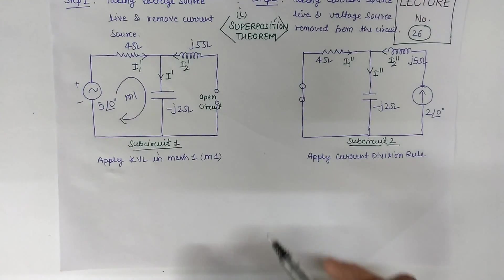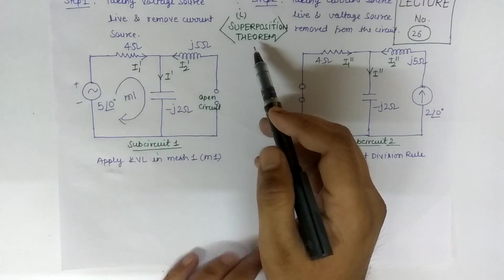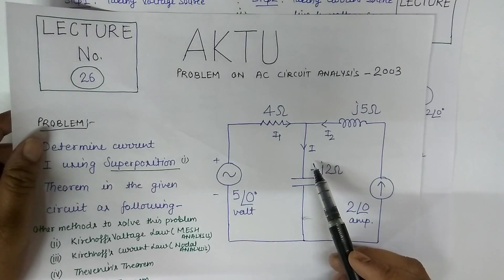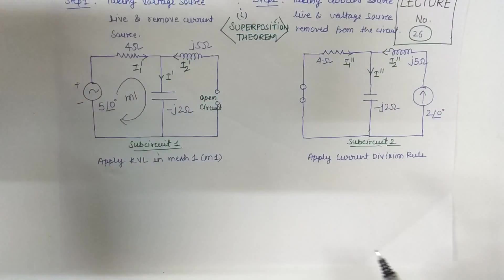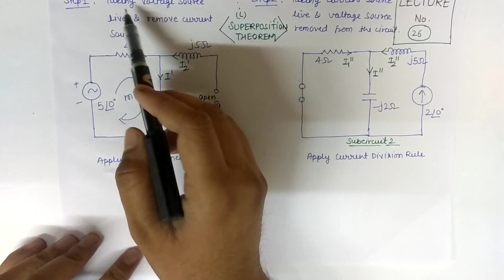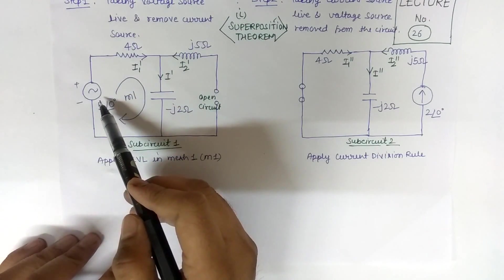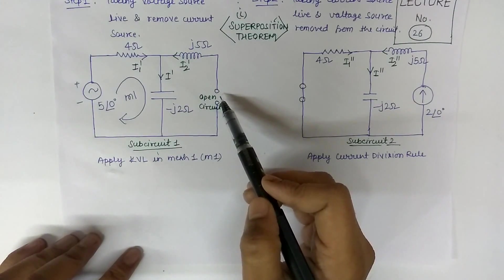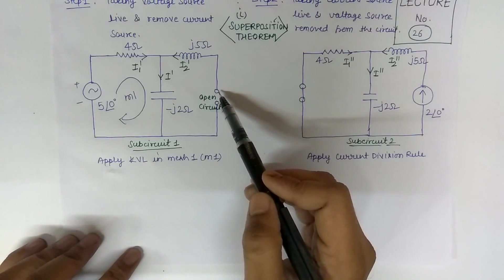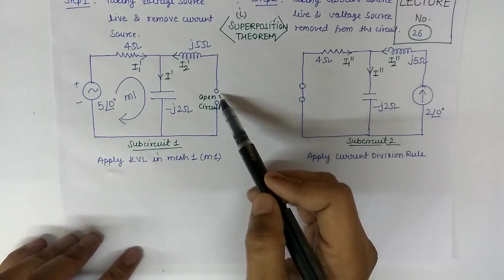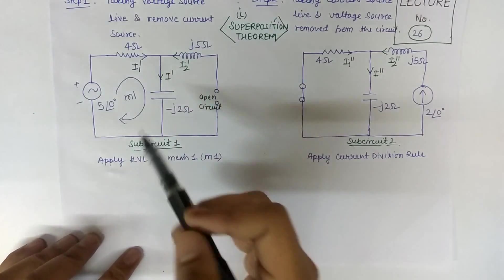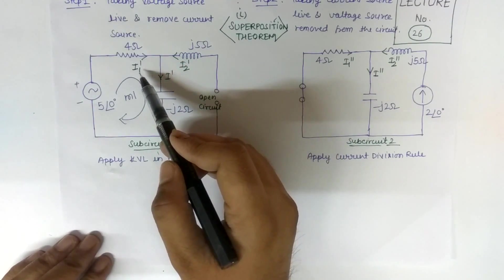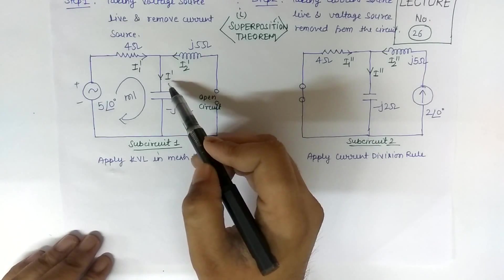In superposition theorem, we first take a sub-circuit. In the main question we have current I1, current I2, and current I. We have to find out I in this branch. In step number one, we take one source at a time. We keep the voltage source active and remove the current source. We remove the current source by replacing it with its internal resistance, which is infinite, so we open-circuit that terminal. We assume currents I1 dash, I dash, and I2 dash. We have to find out I dash. Apply KVL.